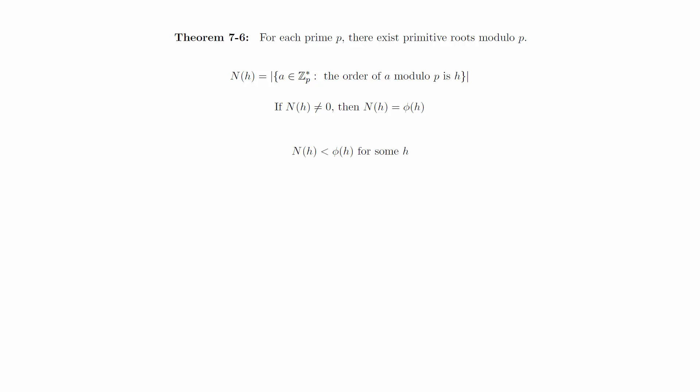Suppose it were the case that N(h) is strictly less than phi of h for some h. Then we would have this inequality. The sum on the right can be evaluated using the result we obtained when looking at arithmetic functions, but when we do that we see we have a contradiction.